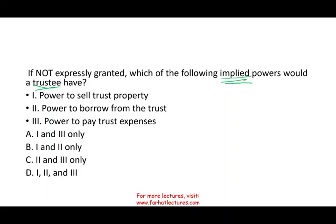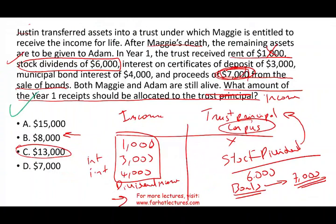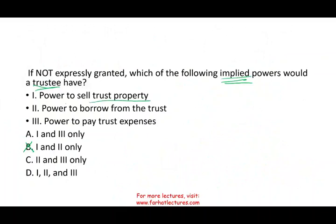We still have A, C, and D. Power to sell trust property — can they sell property from the trust? Going back to the first question, we saw proceeds of $7,000 from the sale of a bond, so yes, they can sell assets. The power to sell property — yes, they can — but it has to be in the best interest of the trust. They are playing the role of the fiduciary. They can sell property, but they have to keep the money in the corpus. So everything with option one stays — C is out because it doesn't have one. Now we're left between A and D.